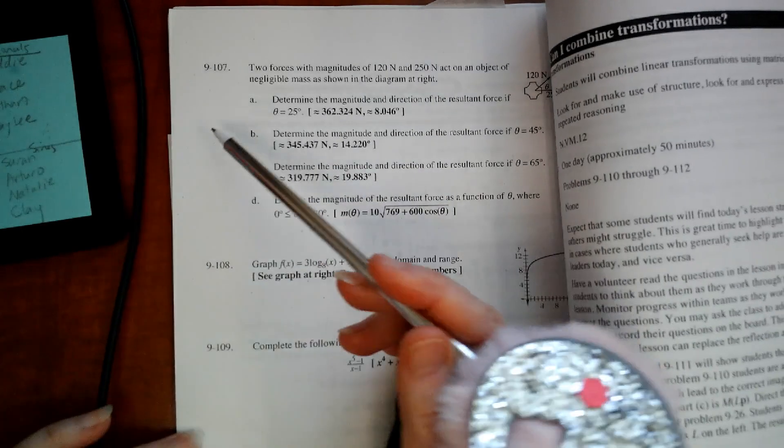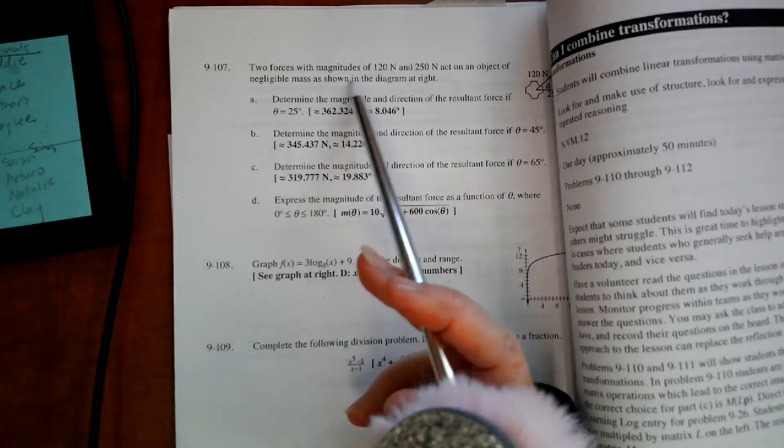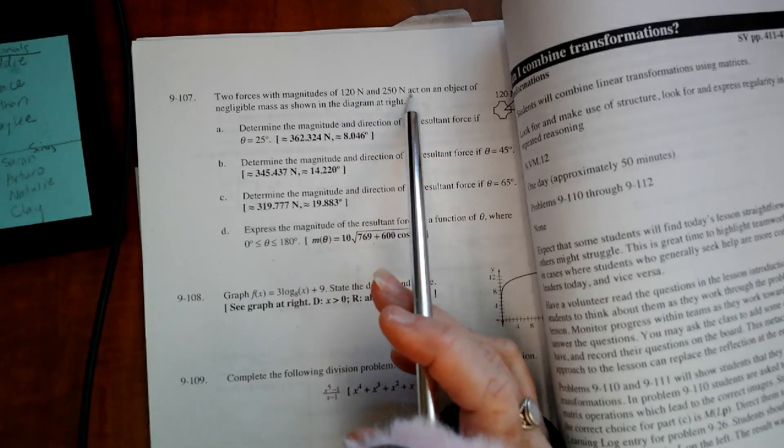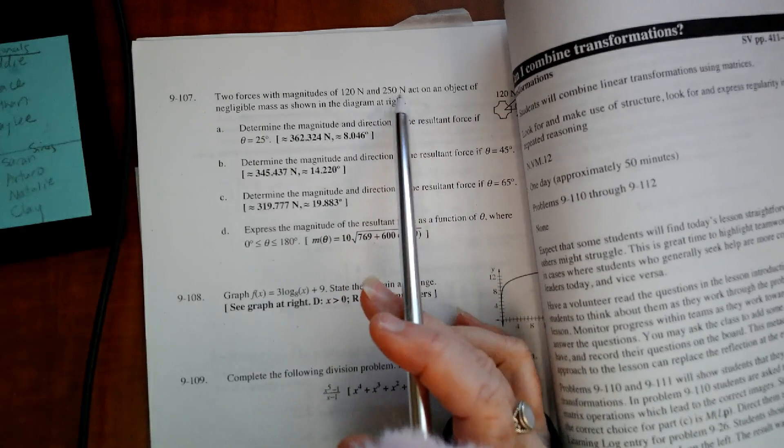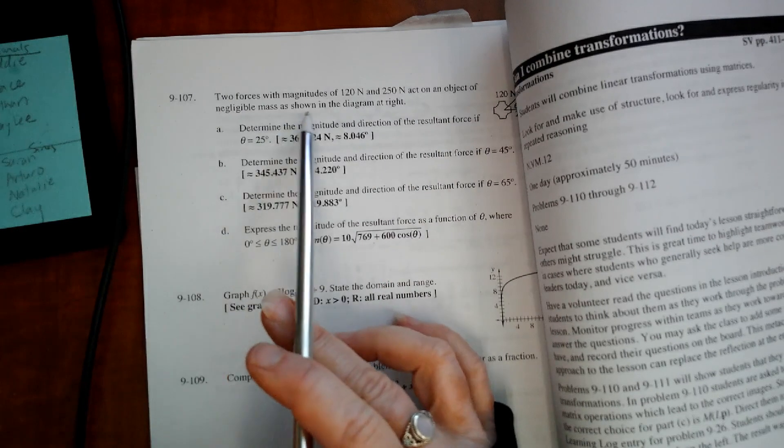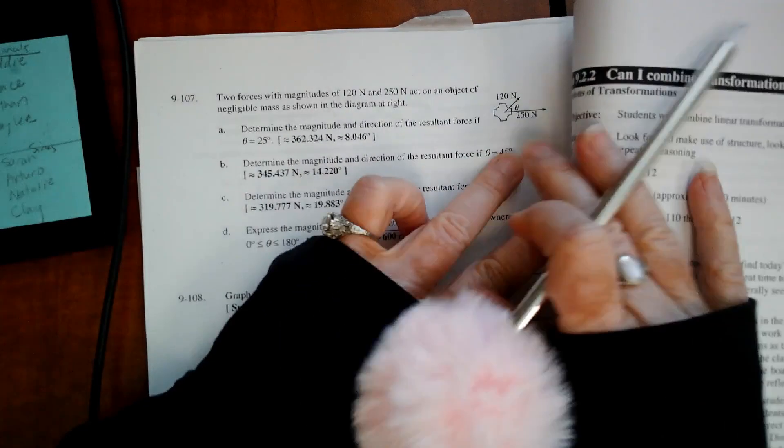This is problem 9-107. It says two forces with magnitudes 120 and 250 Newtons act on an object of negligible mass as shown in the diagram.